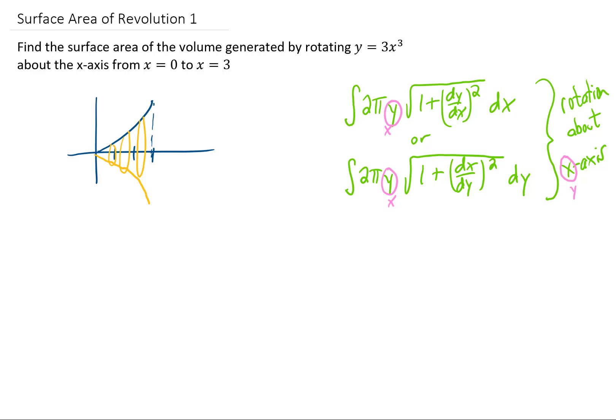When finding the surface area of revolution, the formula depends on the axis you're rotating around, and the choice of formula depends on whether your function is given with respect to x or y. In this example, we're given a function of x and we're rotating around the x-axis, so we're going to use this formula right here. We'll integrate from x = 0 to x = 3.